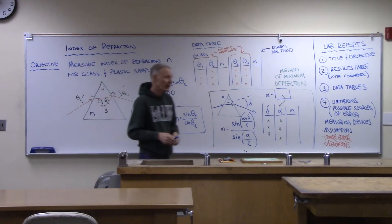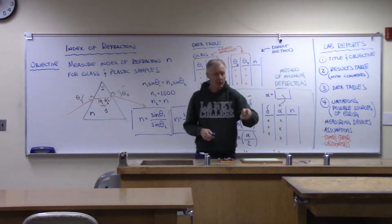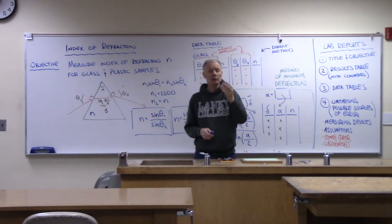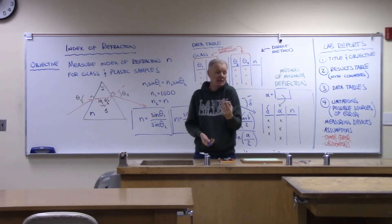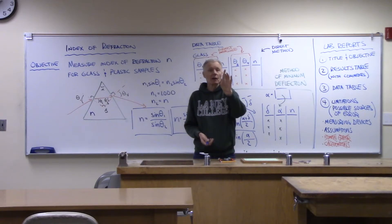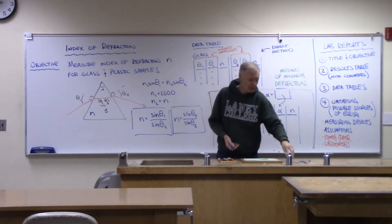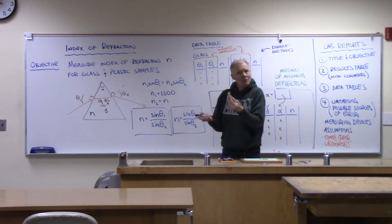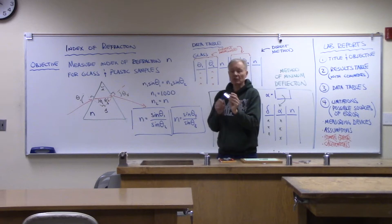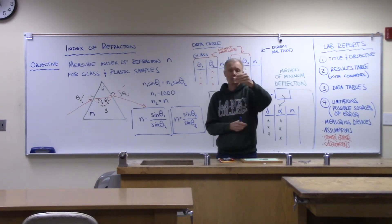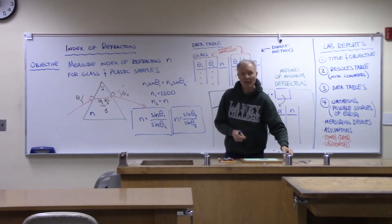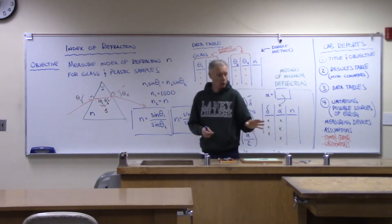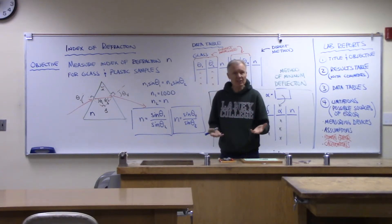I've got those samples right here. Here is our glass sample — it looks like a triangular prism, kind of flattened. And then we have a plastic sample also. This one's also a triangular prism, just taller. Those are the two samples we want to work with, and we want to find out how much they slow down light — what their index of refraction is.